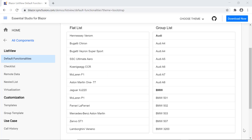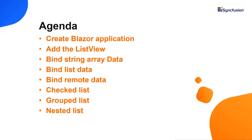In general, you can use the ListView component to display a list of items in a scrollable way. In this video, I'll show you how easy it is to add a Blazor ListView component to a Blazor WebAssembly application. You will see how to configure a few of its basic features like data binding, how to group a list of items, how to list nested items, and how to enable checkboxes.